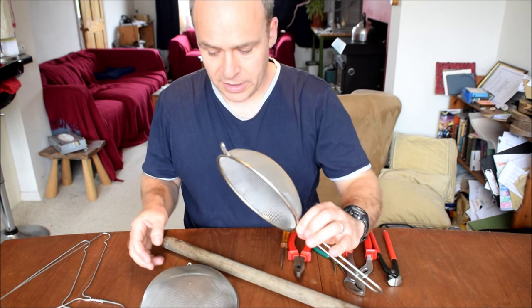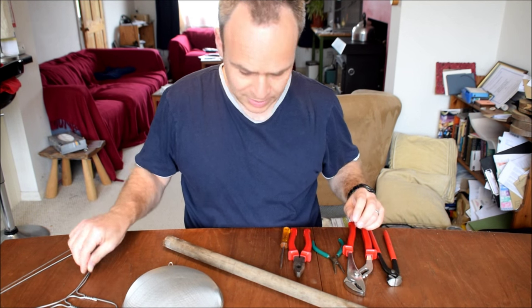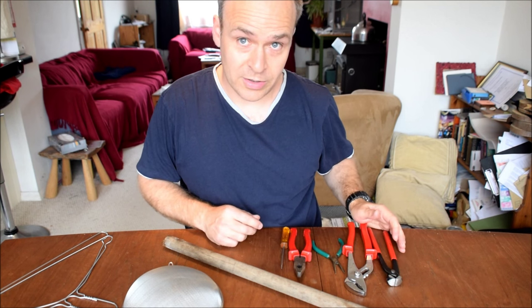All you're going to need is two identical sieves, a broom handle, one or two wire coat hangers and a few tools like pliers and wire cutters.